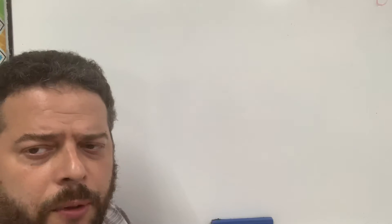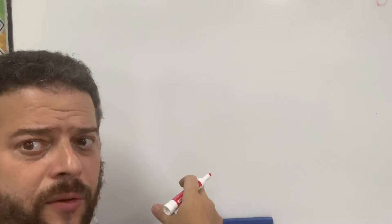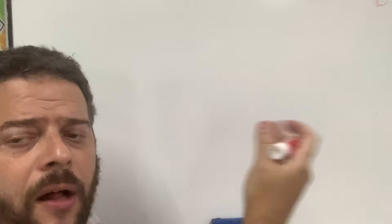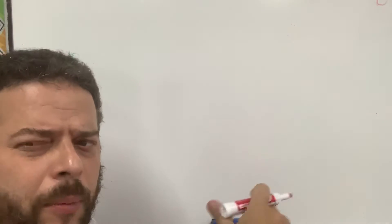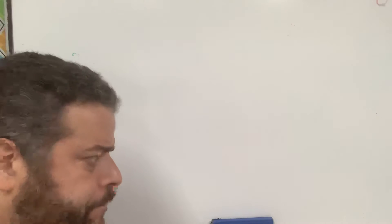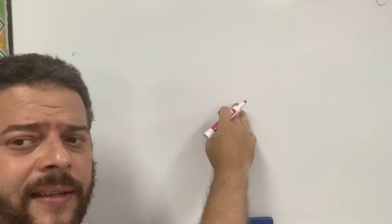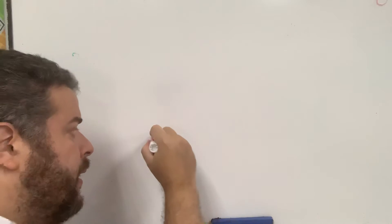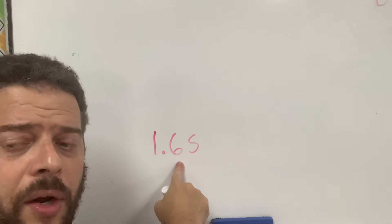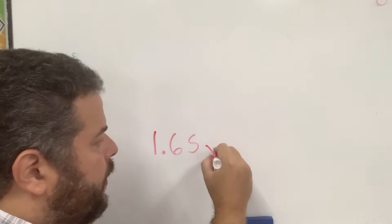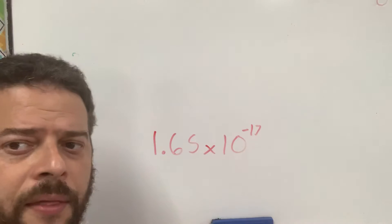Now, first of all, there are three parts to scientific notation. The coefficient, which is always a number that is 1 or greater and also less than 10. So it's only going to be one digit that is not in the decimal part. It also has a base, which in scientific notation is always 10, and an exponent. One example would be 1.65 — this is the coefficient, a number that is 1 or greater — times the base 10 and an exponent.